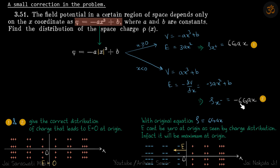You will get it as minus 6ε₀ax. So if you go forward the charge density is positive, and if you go backward charge density is positive. That is the corrected way.